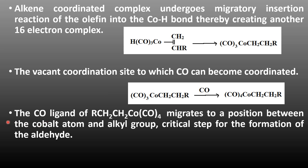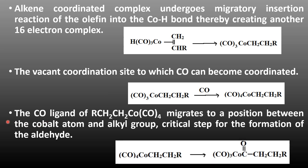The CO ligand of RCH2CH2Co(CO)4, one of the CO ligands from the four carbonyl ligand groups, migrates to a position between the cobalt and alkyl group, forming Co(CO)3COCH2CH2R. This is a critical step for the formation of an aldehyde.